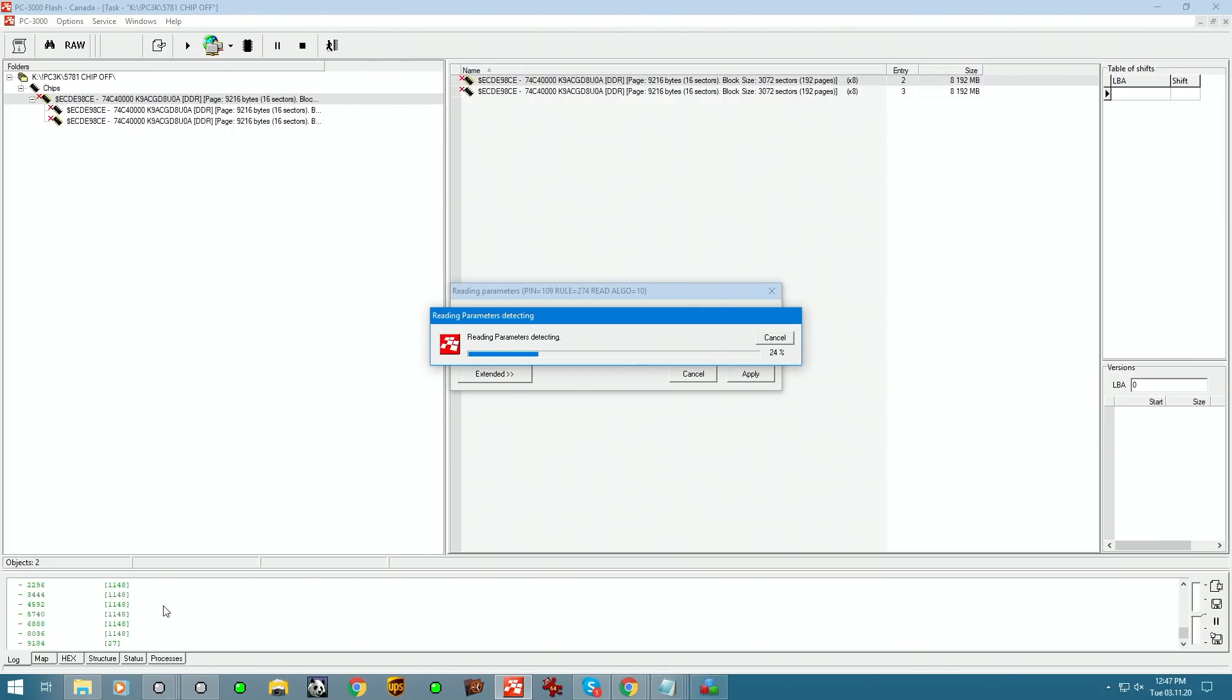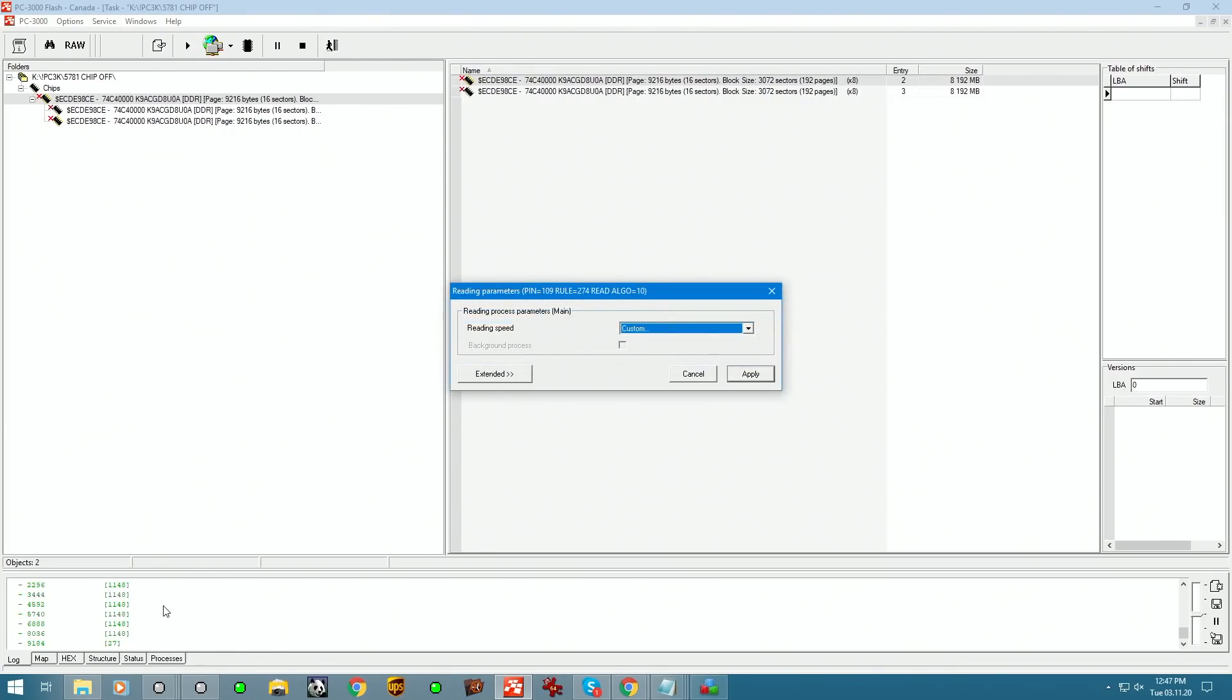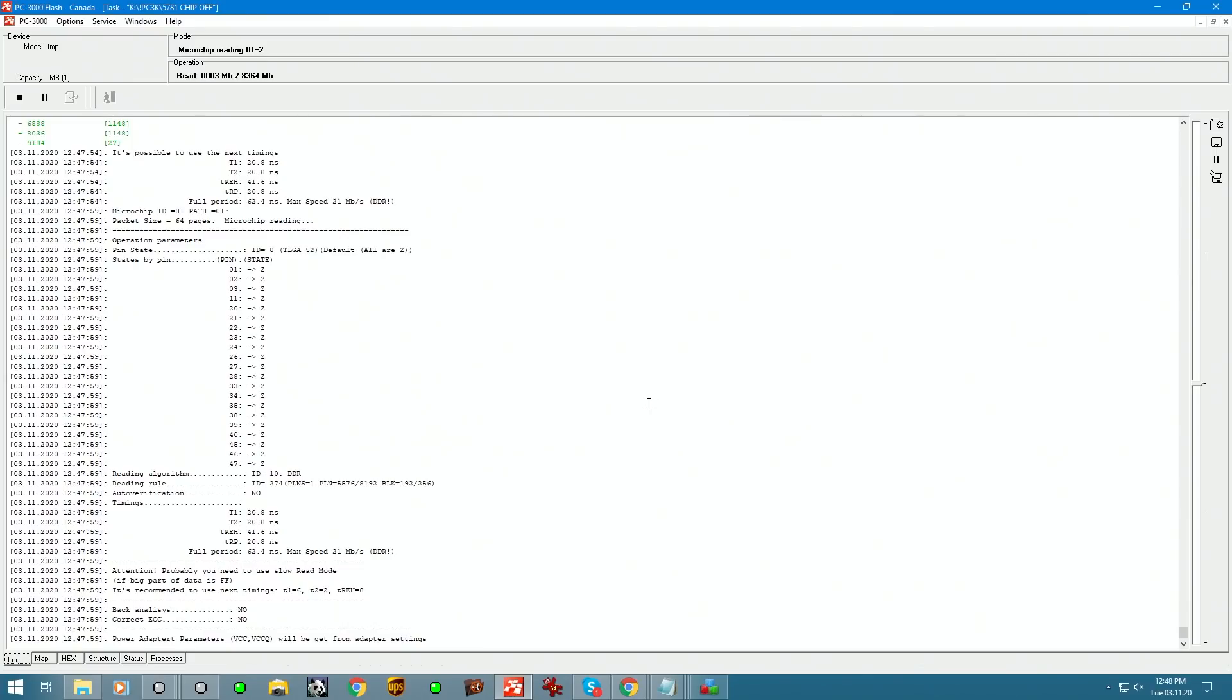Custom max speed 21. Oh, that would be amazing. We got 7 megabytes per second speed, 21 minutes to read each part. And we have two of them, so 8 gigs each.